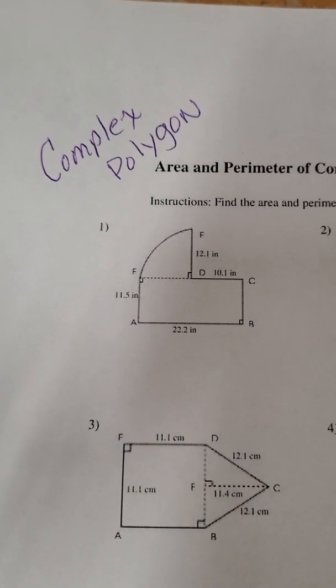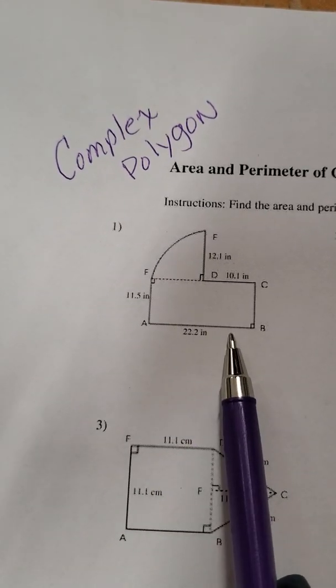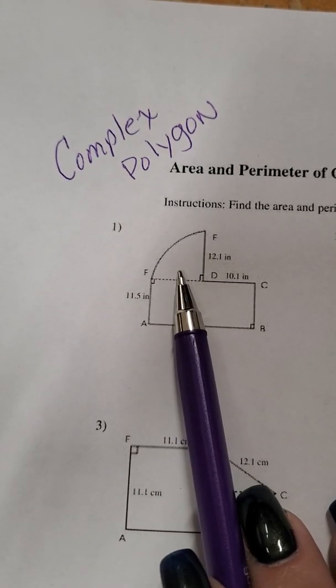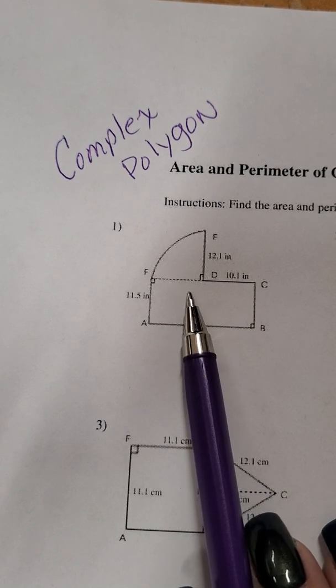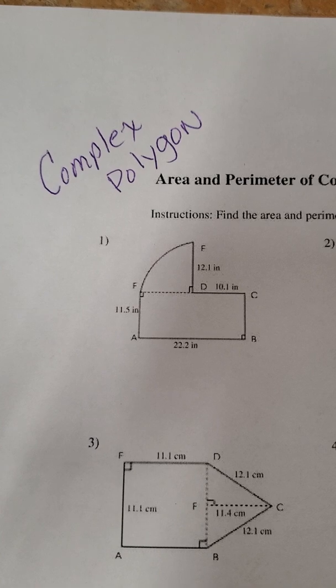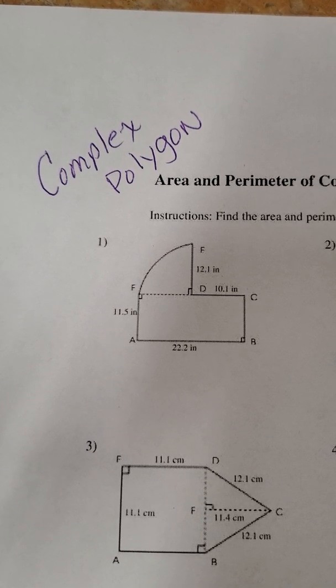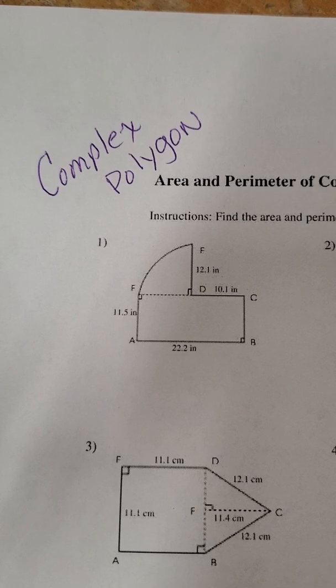So if you want to draw this number one figure here we're going to draw a rectangle with a quarter of a circle attached to it and to find, let's just start with perimeter, how we would find the perimeter of that. So if you want to pause this to make that shape that's fine.